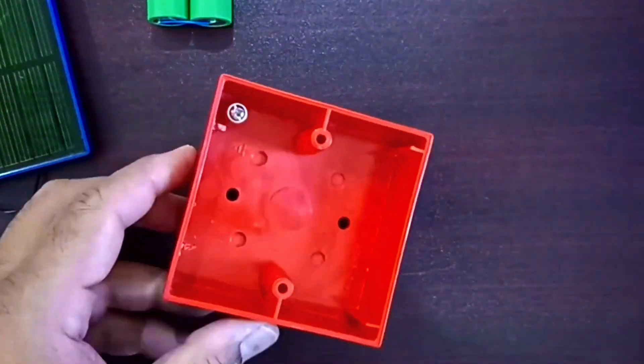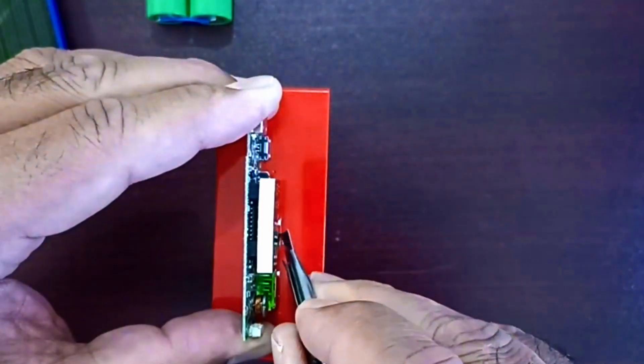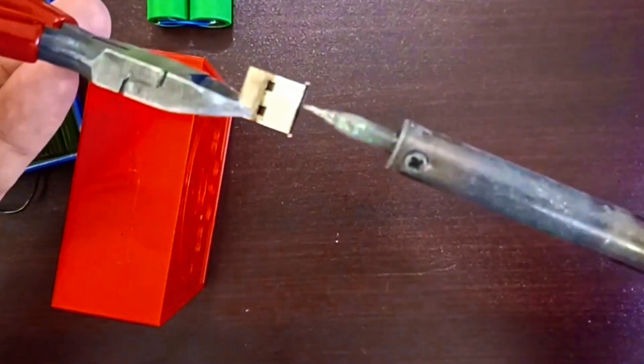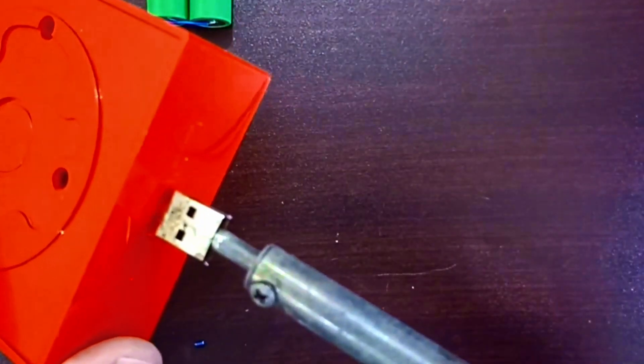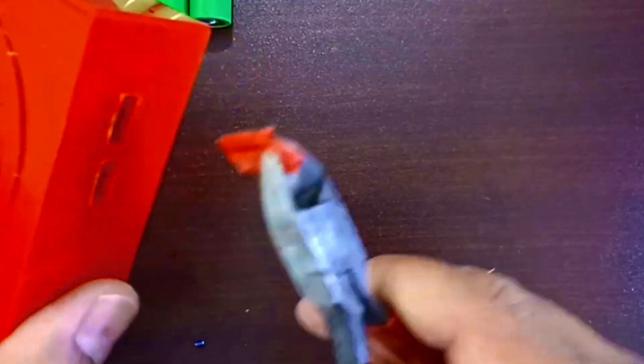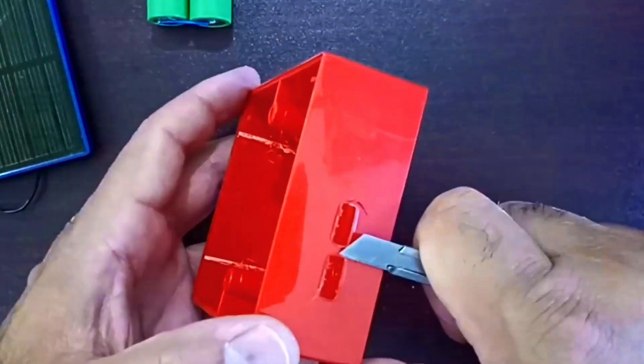Now let's dry fit the module. We'll mark out exactly where the ports and display should pop through, using a spare USB plug to get the sizing perfect. Cutting the holes carefully, melting with a soldering iron and trimming with pliers. It smells bad but it works. Shaving the edges with a knife so everything sits flush, no ugly gaps.